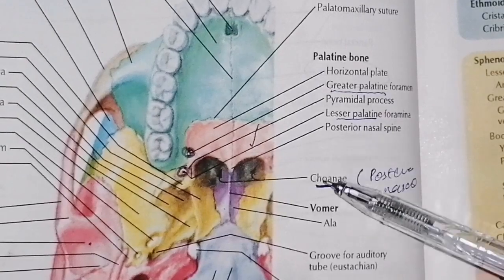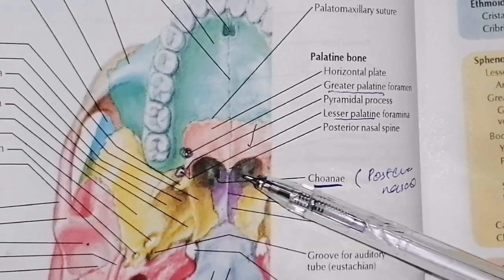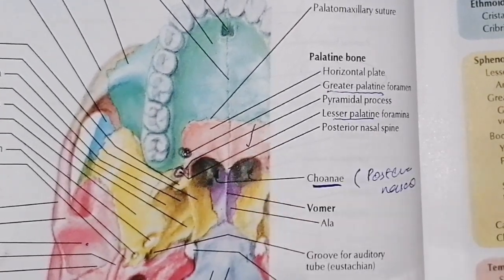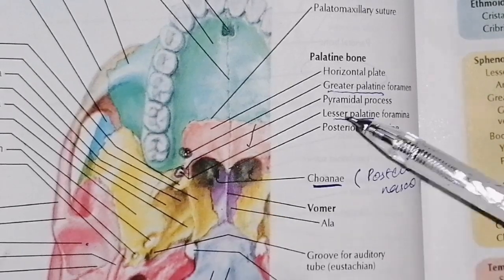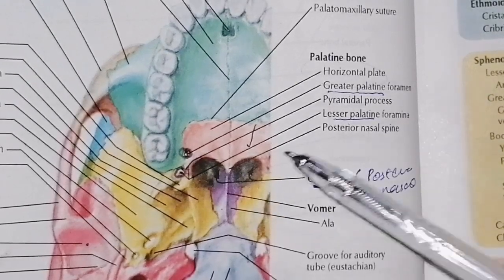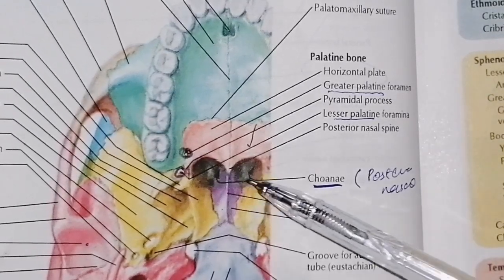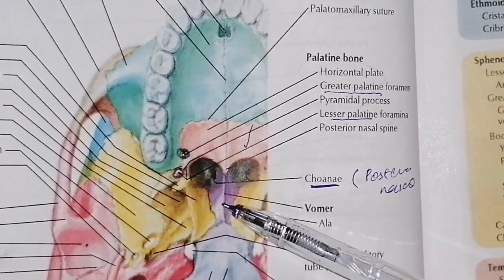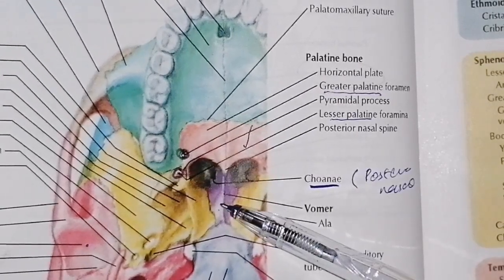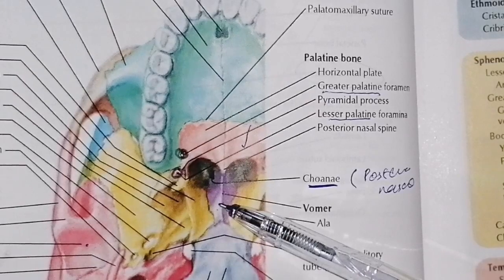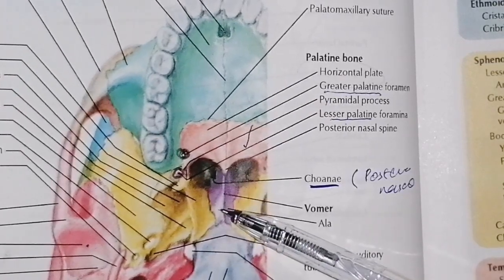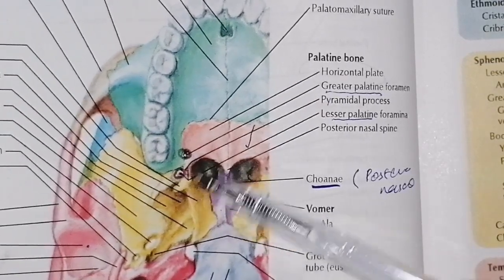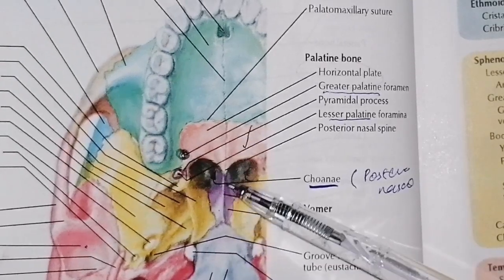Posteriorly we have two openings called the choanae — these are the posterior nasal openings which go into the nasal passageway, larynx, trachea and so on. These two posterior apertures are separated by the vomer. This is a very important point — the nasal cavity is divided into two portions by the vomer bone.